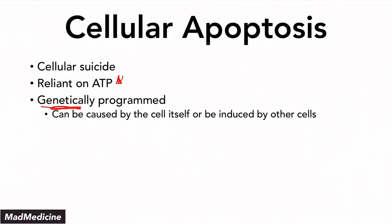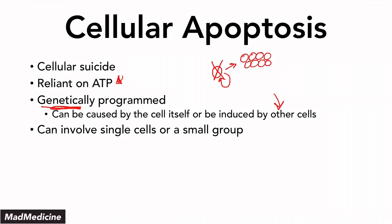Apoptosis can be caused by the cell itself or by other cells. For example, if a cell is multiplying too much, it can recognize this is not right and kill itself off, preventing further growth — like an auto-feedback loop. Nearby cells or other cells can also recognize abnormal cells and send macrophages, neutrophils, and lymphocytes to kill them off through other mechanisms. Apoptosis usually involves a single cell or a small group of cells.